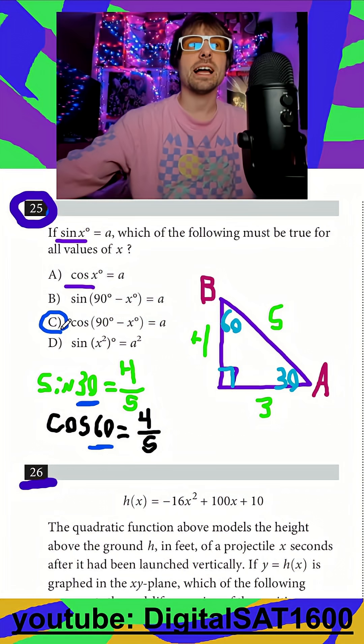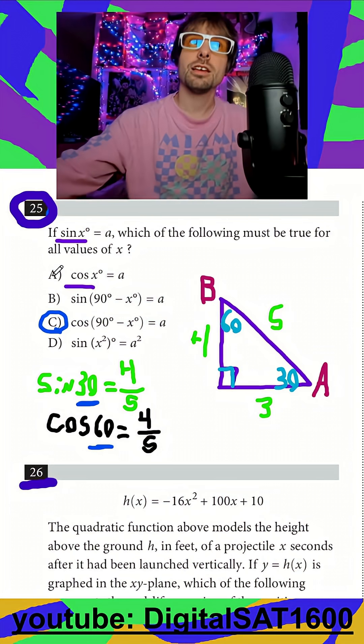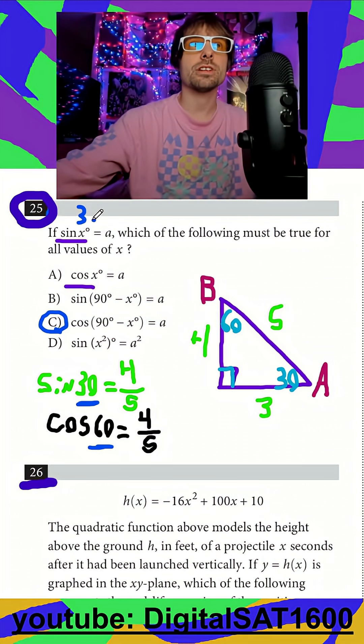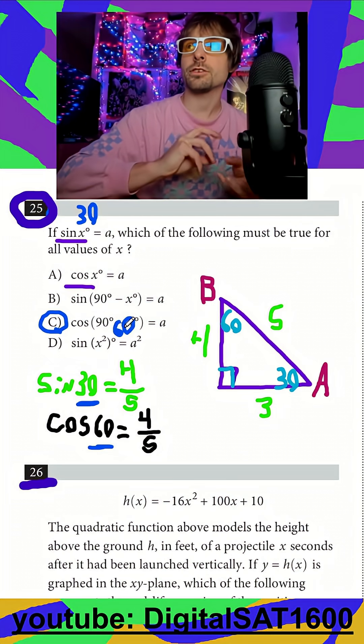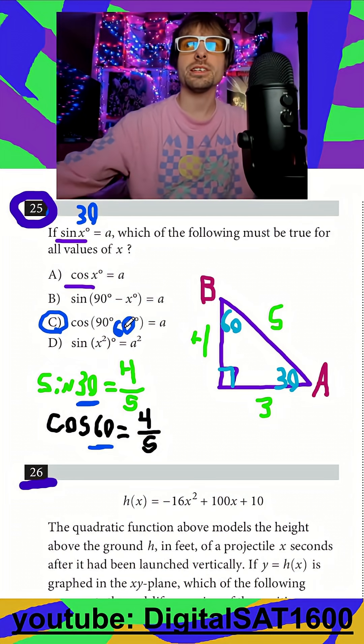I know that the cosine of 90 minus that x. For instance, if this x was 30, in C I would see 90 minus 30, which would make this 60, and we just showed in our example that these are going to be equal to each other. It's just going to be C here.